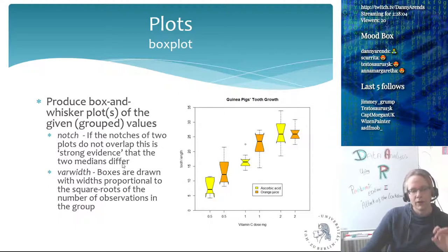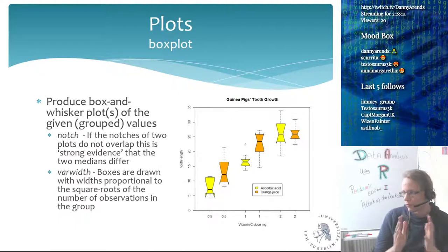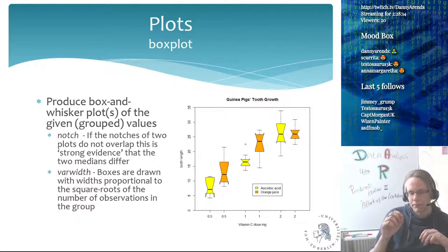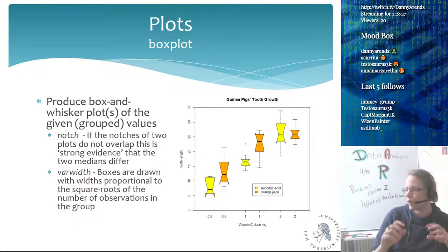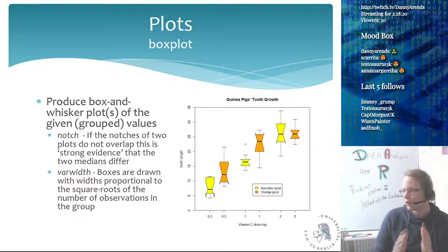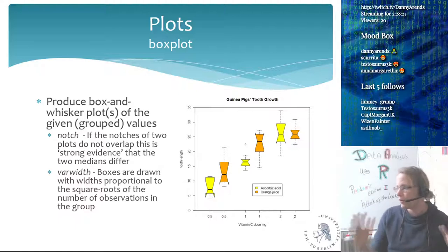Another parameter for box plots is varwidth, which makes the width of the box plot — its bulkiness — based on the number of observations in the group. A very low number of observations gives a very skinny box plot, while a large number of observations gives a very fat box plot, adding this additional information to the visualization.